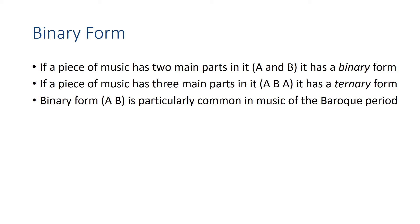Binary form is particularly common in music from the Baroque period. Dances such as the Allemande, the Courante, the Sarabande, and the Jig will always have two parts in them. These occur in the Baroque dance suites.